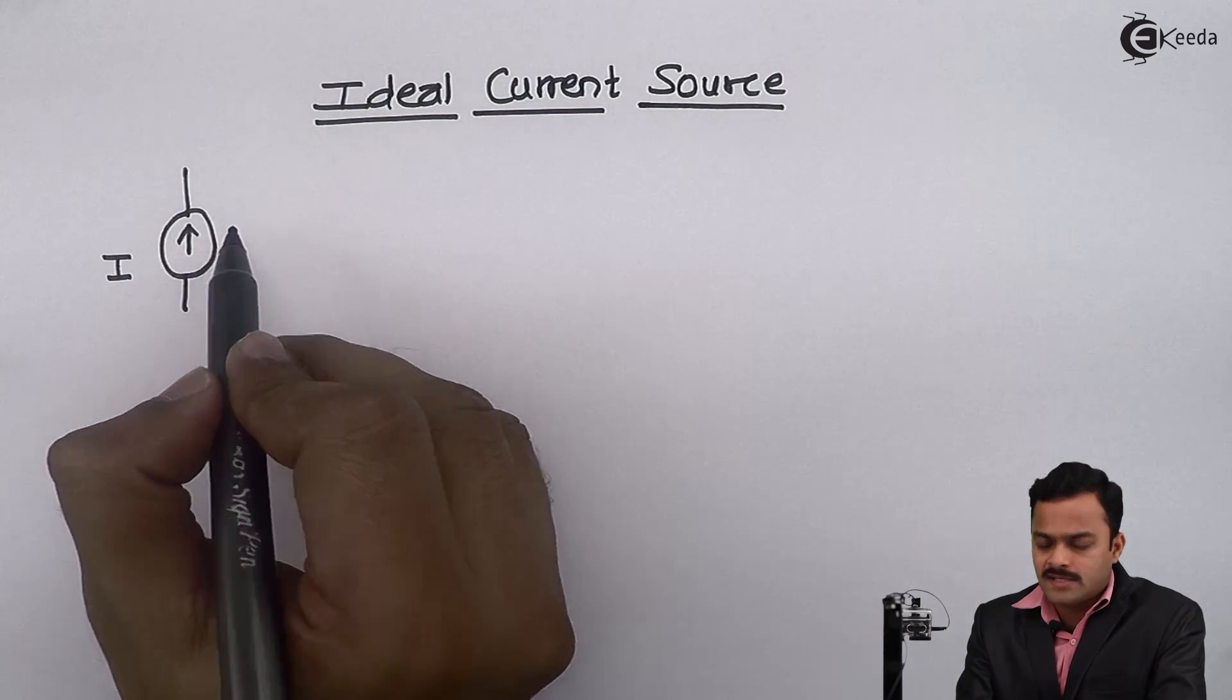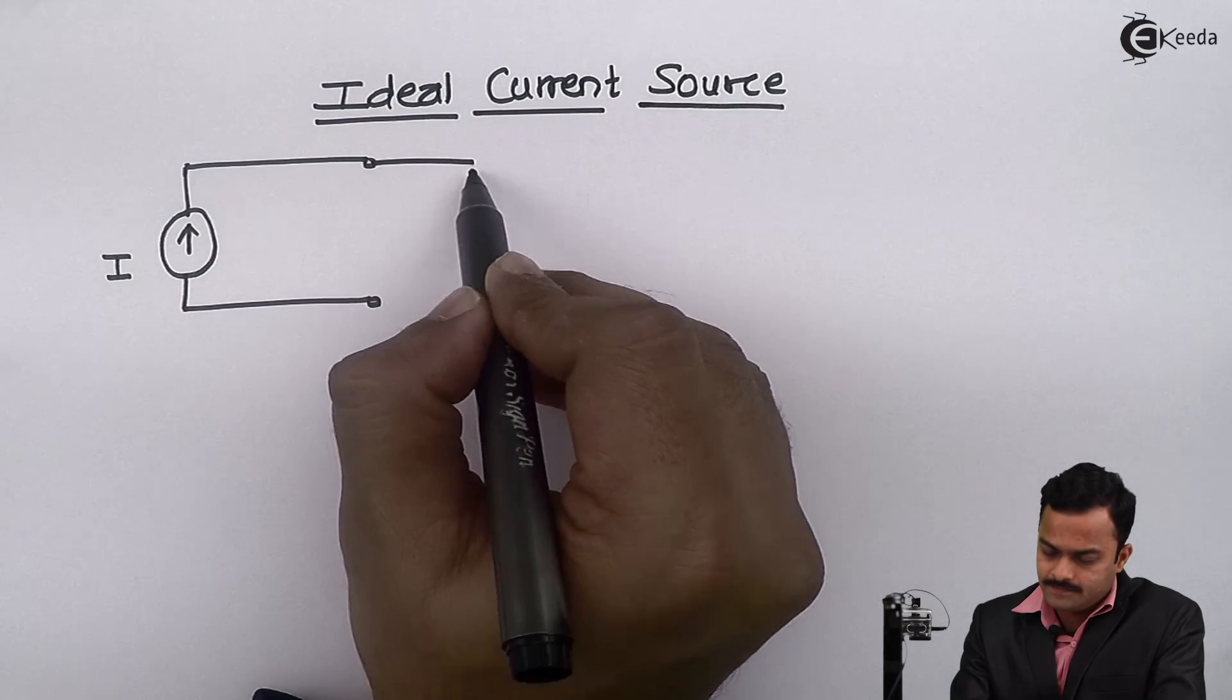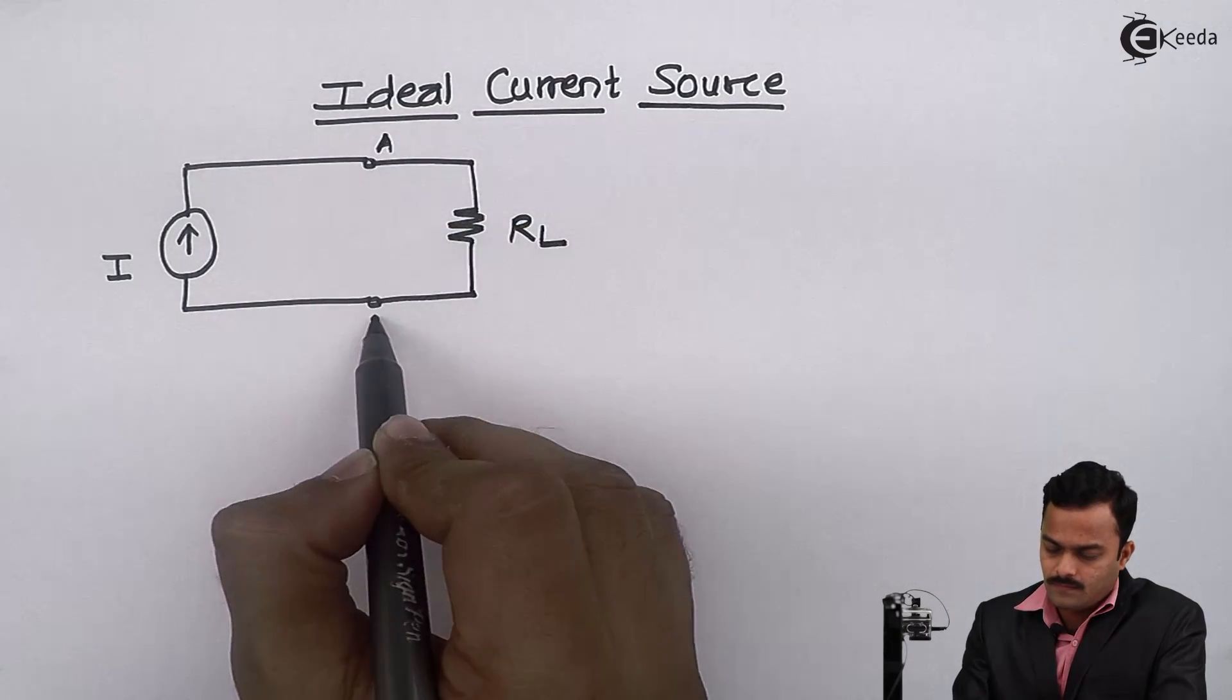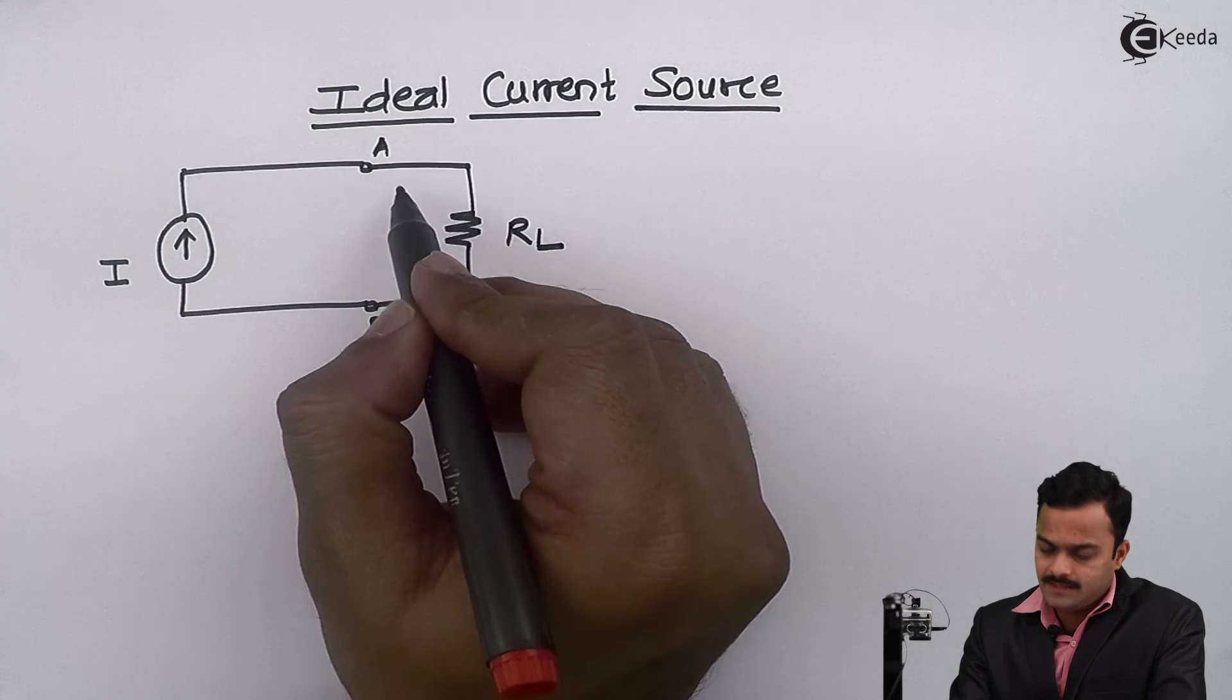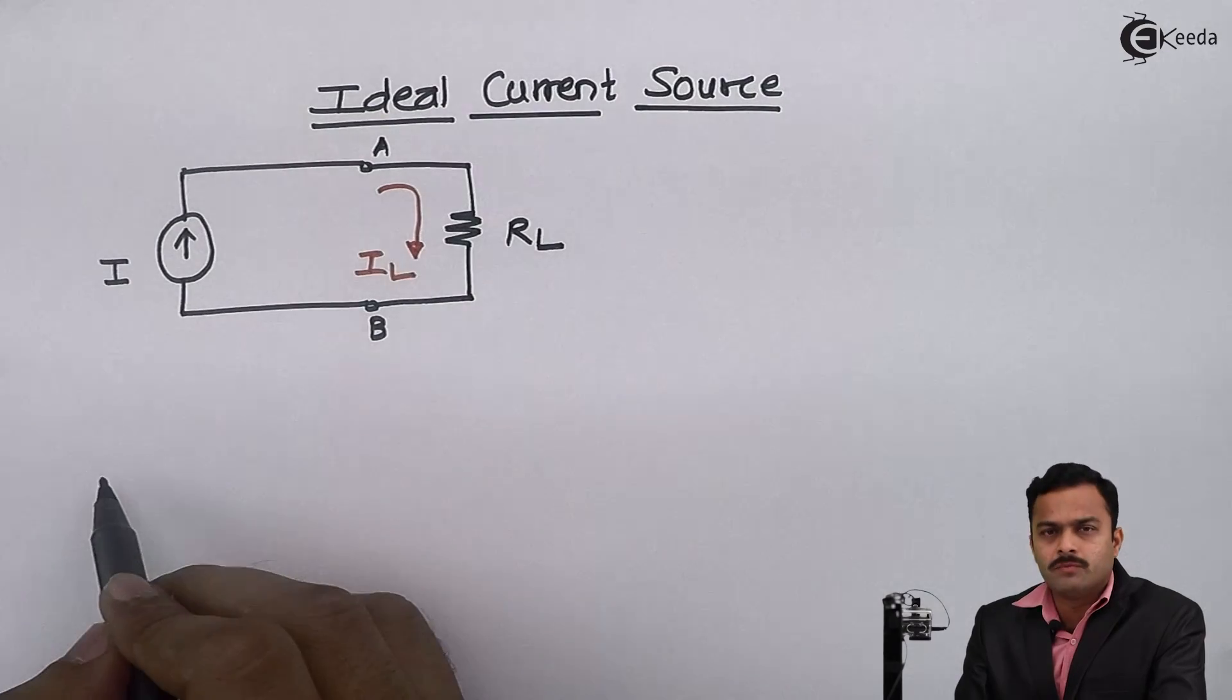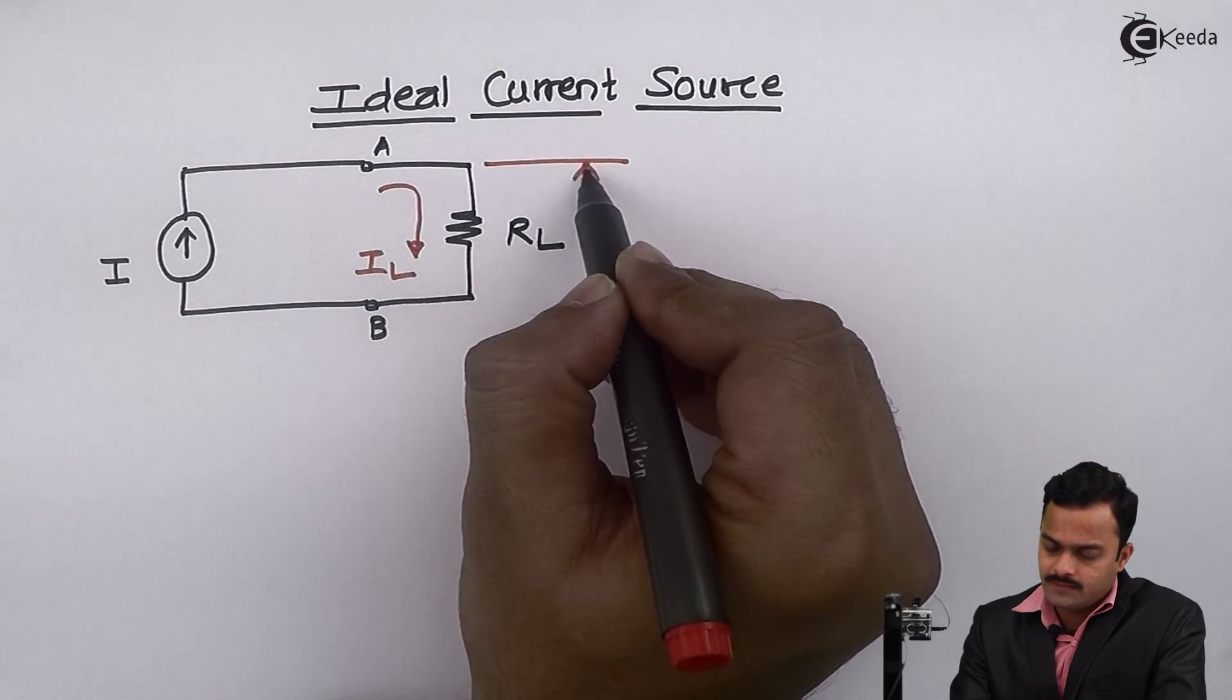To this current source I am connecting a load resistor RL. Now the circuit is closed, current will flow through this RL which will be IL.